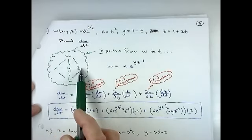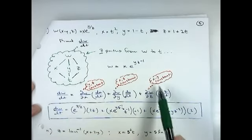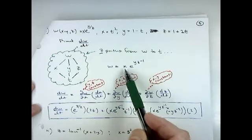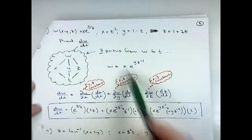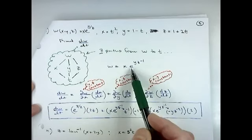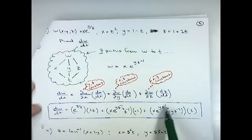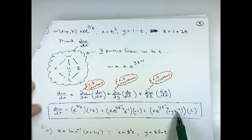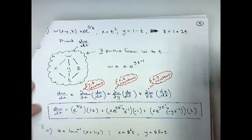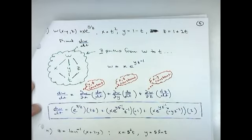Finally, the partial derivative with respect to z times dz/dt. Holding x and y constant, x stays there. The derivative of e^(stuff) is e^(stuff), now treating z as the variable. Y is constant so it comes down as a coefficient, and the derivative of z^(−1) is negative z^(−2). Times dz/dt which is 2.